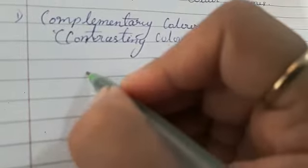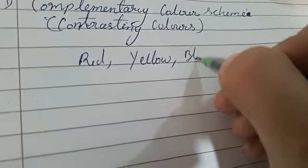To find the contrasting colors, first we are going to take three primary colors, that is red, yellow, and blue.